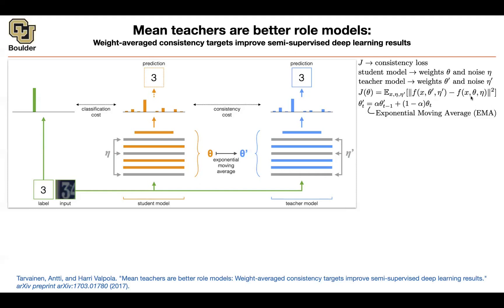Having two different parameters is going to give you two different neural networks. One of them is not being trained — it's going to give you a target for the parameters of the student to adapt to. And you are making things less likely to collapse.